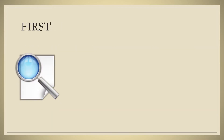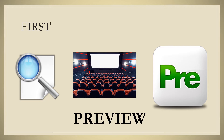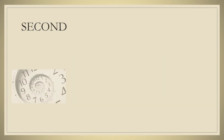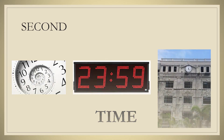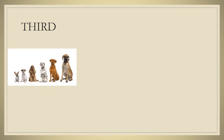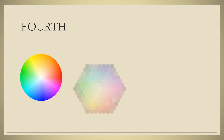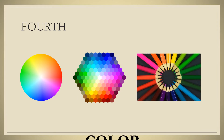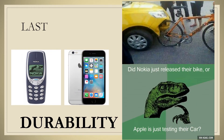Here are the first three pictures. What is the word being described by these? If you answered preview, you got it right. Next — the answer is time. Another — you're right, size is the word. Okay, next — very good, the word is color. Lastly — exactly, the word is durability.